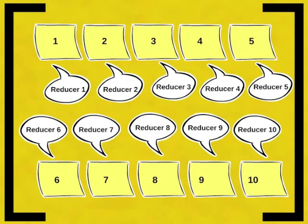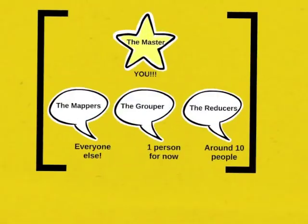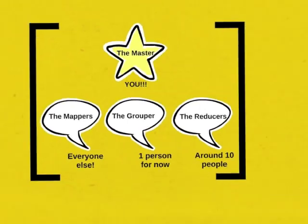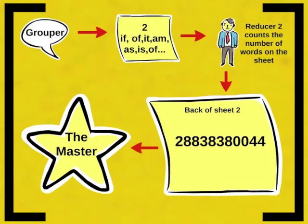The reducers: each reducer gets one sheet from the grouper. For each sheet, they count the number of words written on it and write it in big bold letters on the back of the paper. For example, if you are reducer two and you get sheet two from the grouper, you count the number of words on that sheet — say the number is 288,383,844 — write it on the back of the paper in big bold letters, and give it to the master.